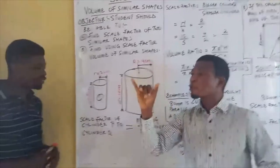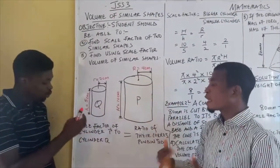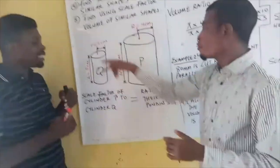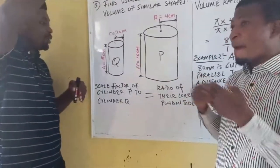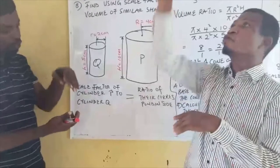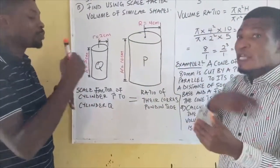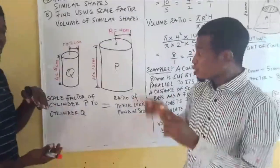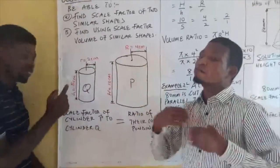I want you to get something clear in this video. The scale factor for cylinder P to cylinder Q - if you are asked P to Q, it simply means that you have to have the bigger one which is the P above the smaller one which is the Q. In the other video we have it as the ratio of the smaller shape over the bigger shape.